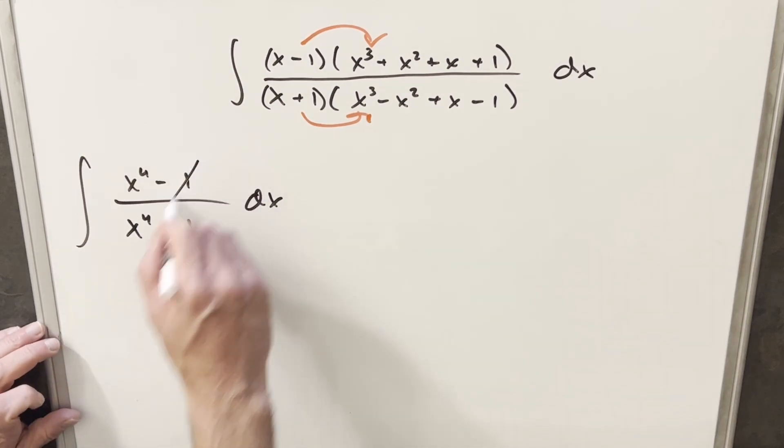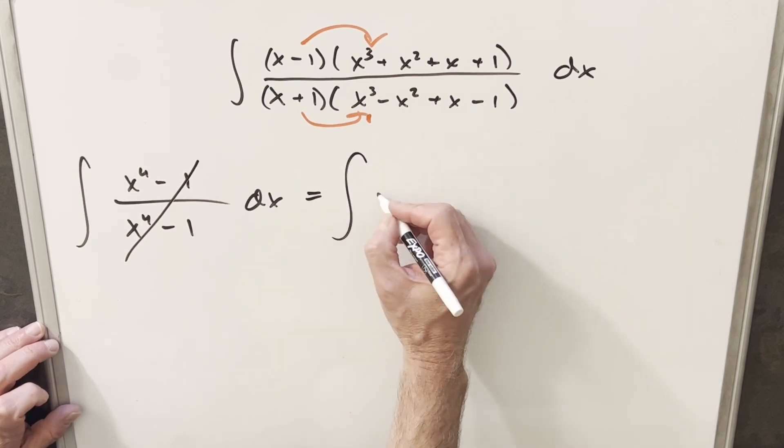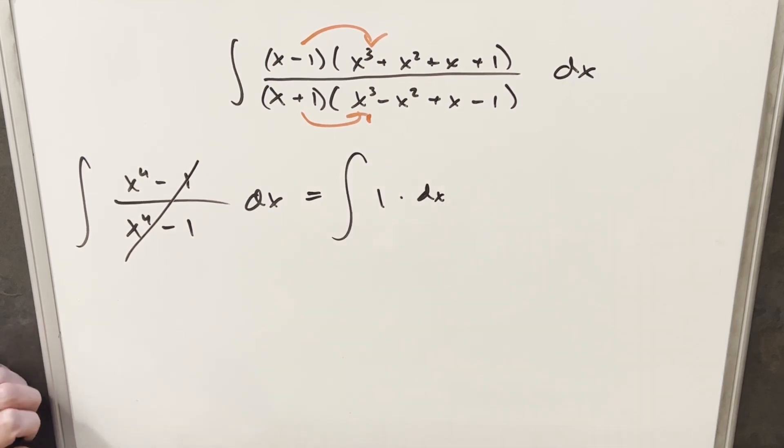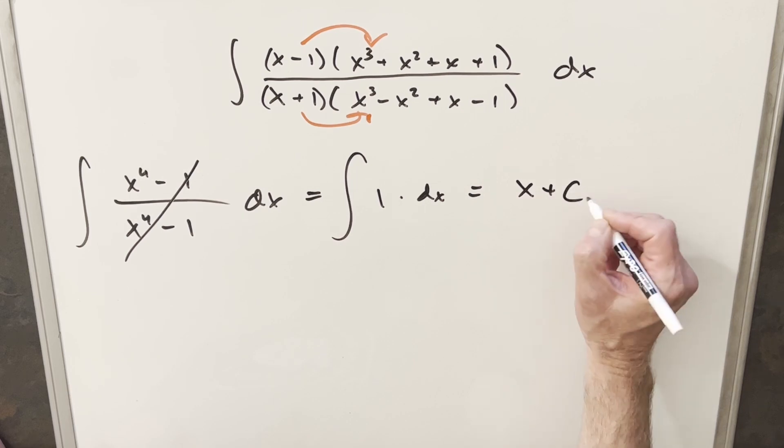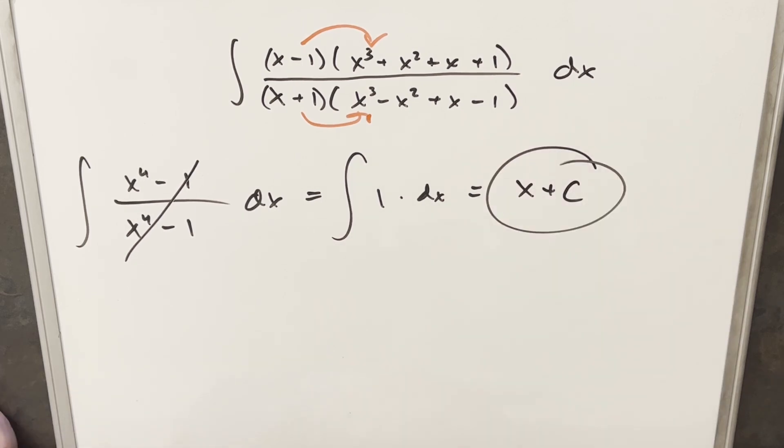You'll know that this whole integral, everything's going to cancel. This is going to cancel down to 1. We're just integrating 1, and it's going to be just x plus c. So yes, you could probably do this one in less than 5 seconds. I just thought it was kind of fun, so we'll stop it there. Thanks everyone for watching. Have a great day.